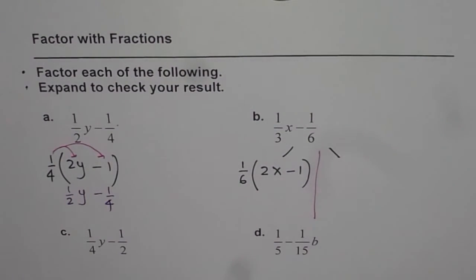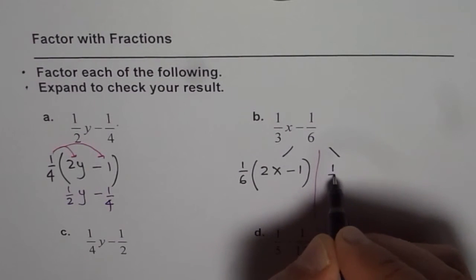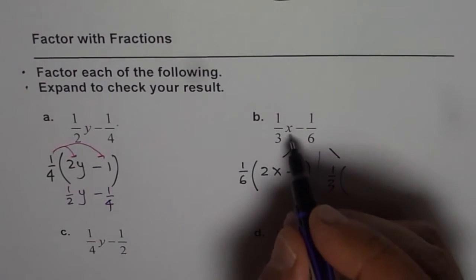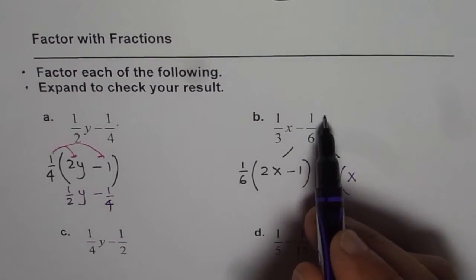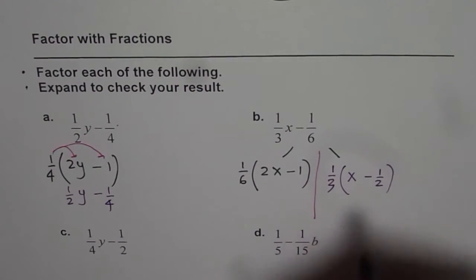On the other hand, if I factor 1/3, then within the bracket, we have to multiply each term by three. So we get x for the first term, minus 3/6, which is 1/2. So we are left with fractions here.